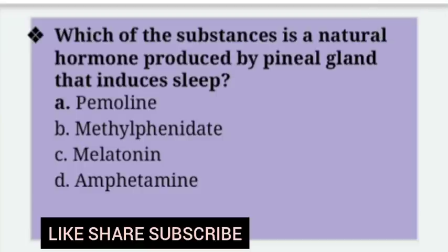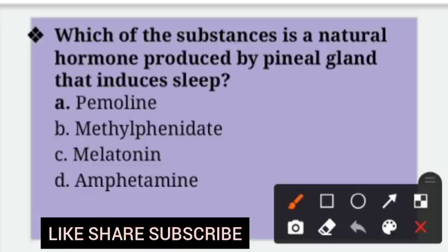Which substance is a natural hormone produced by the pineal gland that induces sleep? Options: Pambolin, Methylphenidate, Melatonin, Amphetamine. Right answer is option C — Melatonin. The pineal gland is the smallest gland present in the brain; it produces melatonin, which regulates biological rhythms, that is the sleep-wake cycle.